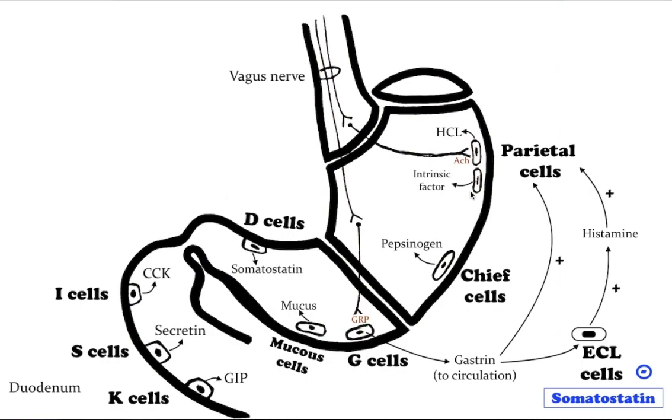Parietal cells are primarily regulated via histamine, acetylcholine, and gastrin signaling from both central and local modulators. Vagus nerve fibers from the medulla stimulate the parasympathetic nervous system of the stomach, which in turn stimulates gastric secretion via parietal and G cells.